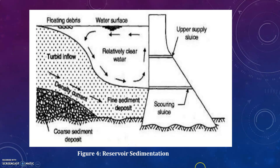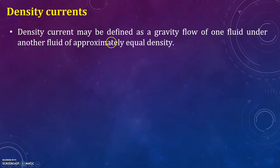This figure shows reservoir sedimentation. You can see the fine sediment deposit and the coarse sediment deposit. Also shown are the sluices and upper supply sluices, where relatively clear water will be present, as well as the water surface and floating debris.